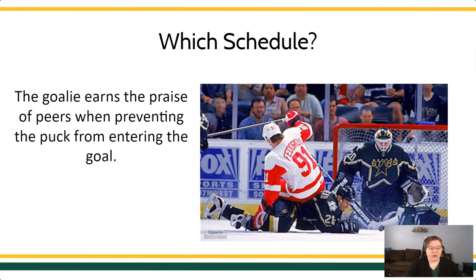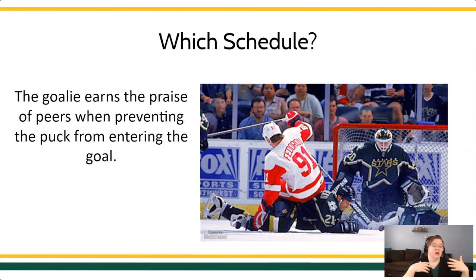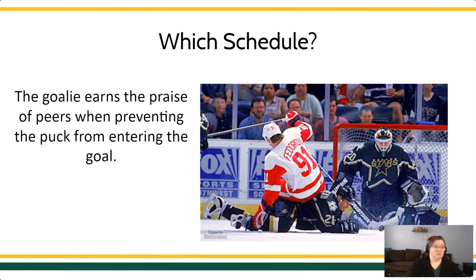What about this one? A goalie can earn praise from peers when preventing a puck from entering the goal. This one is a little bit beyond the control of the goalie, because you can only do your job as a goalie when the opportunity presents itself — when there is a puck to defend against. Some goalies, the puck never comes toward their goal. Since there's nothing the goalie can do to increase the probability or defend faster, we're probably looking at some sort of interval-based schedule. Based on the way that hockey occurs, it's probably a variable interval schedule, because it's not like every five minutes that puck is coming toward your goal — sometimes it can be never during a game, sometimes two or three within a few seconds.